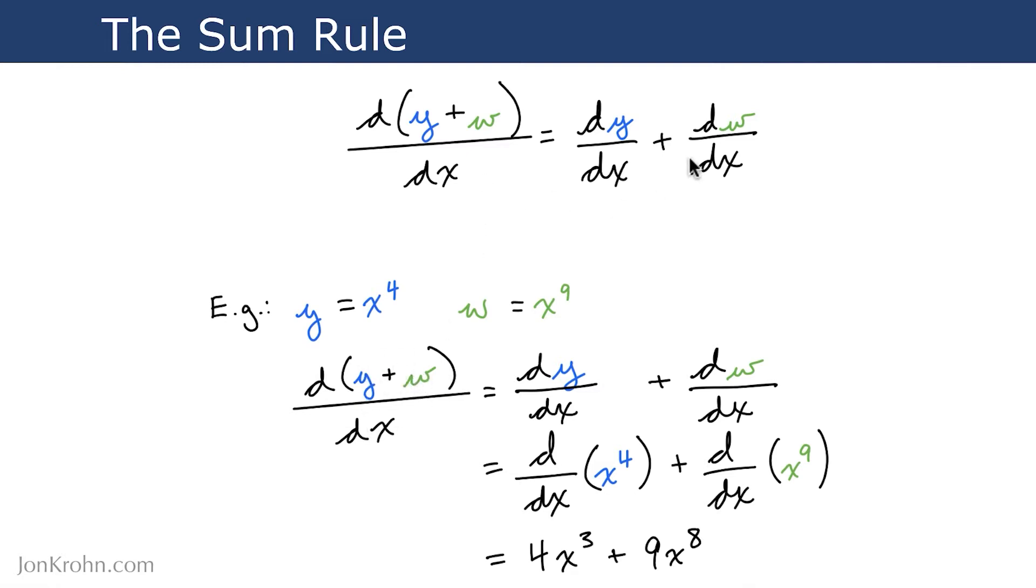According to the sum rule, we can split up these two terms and calculate the derivative on them separately. So we can calculate dy dx and dw dx as two separate terms.